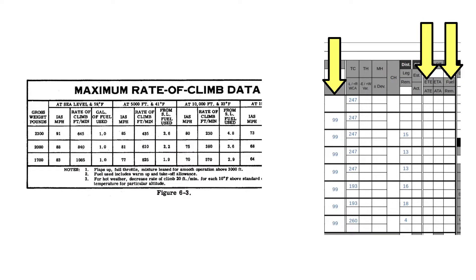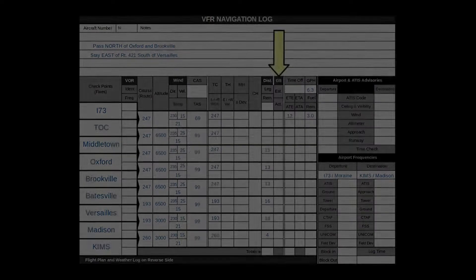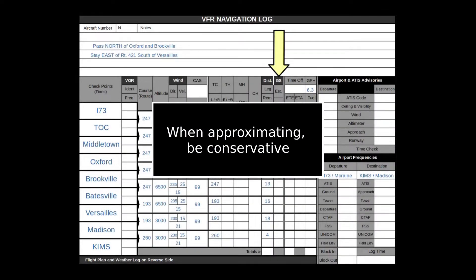While we're here, we'll use the rate of climb data to estimate the amount of time it will take us to get from 720 feet up to 6,500, along with the true airspeed and fuel burn we'll have during this time. If you choose to make any approximations with the performance interpolations, make sure to be conservative.